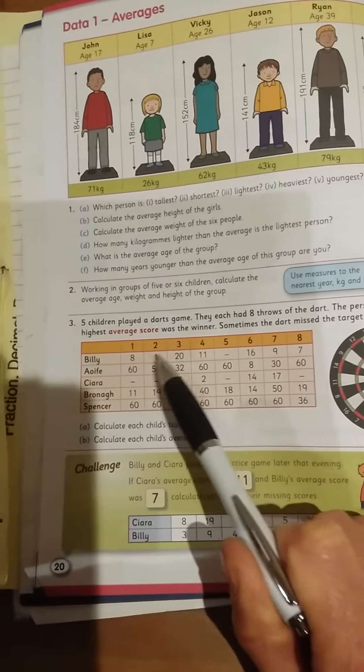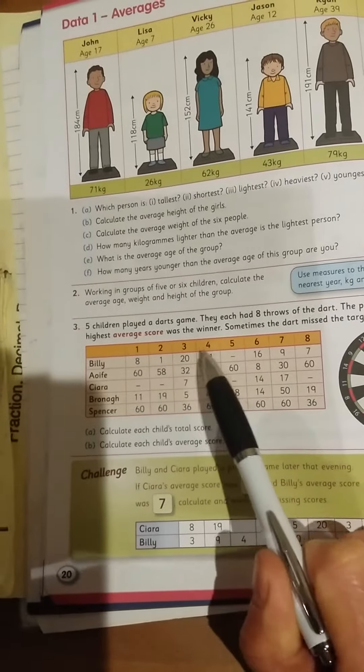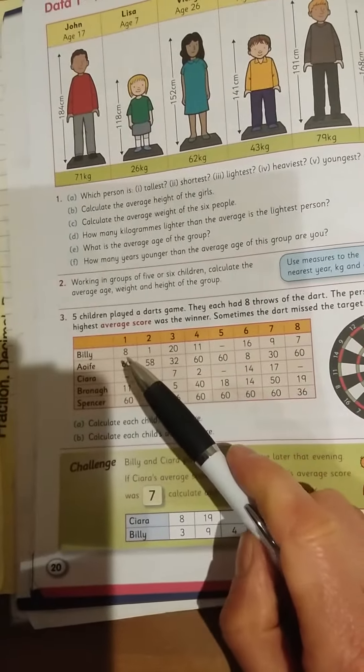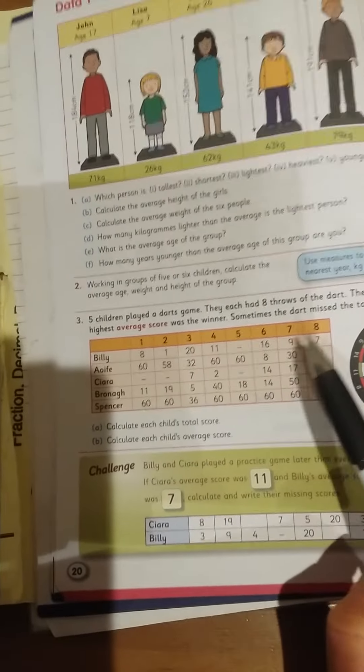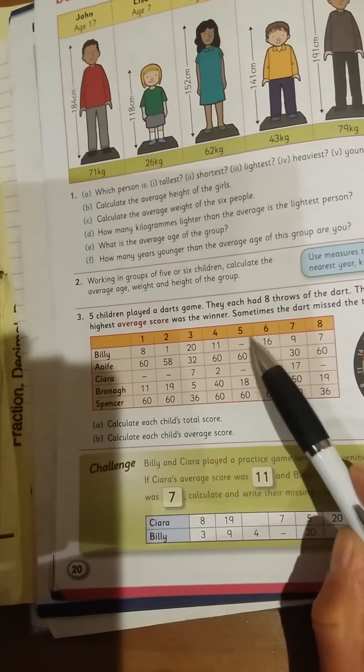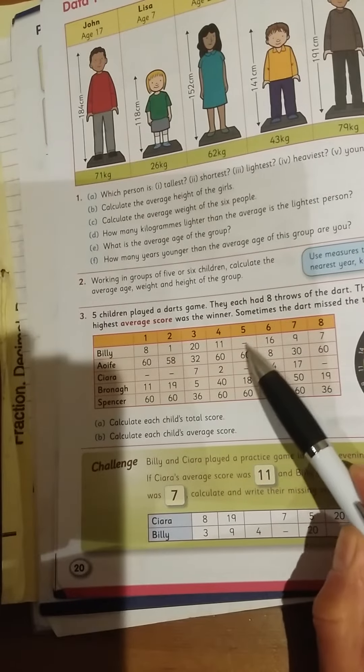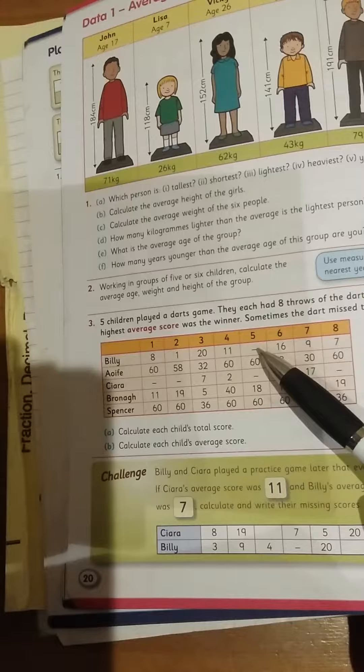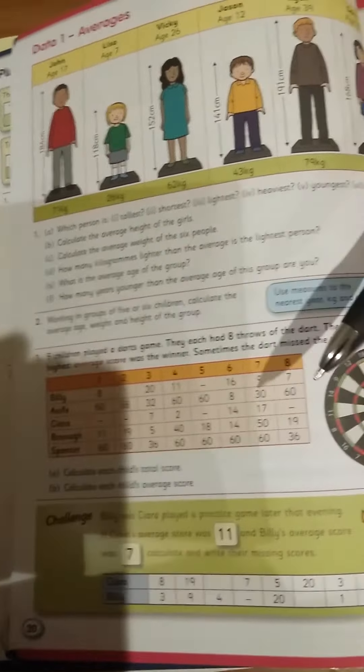Now, if we had to work out his average, we'd add all his numbers together and we divide by the number of throws he had: 1, 2, 3, 4, 5, 6, 7, 8. Divide by 8. And we do include this, because this effectively is a 0. We do include that when we're dividing.